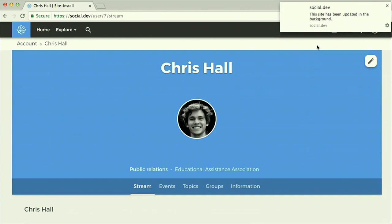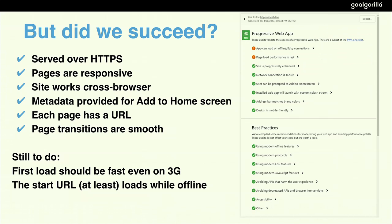Did we actually succeed in creating our own Progressive Web App? There's a cool open source tool called Lighthouse — it will check your web app and score it. In our case we hadn't really touched performance yet. There's a Drupal 7 module called PWA that addresses performance, and hopefully we can combine that with our Drupal 8 version. But actually we got quite a good score already, just with the code you've seen.